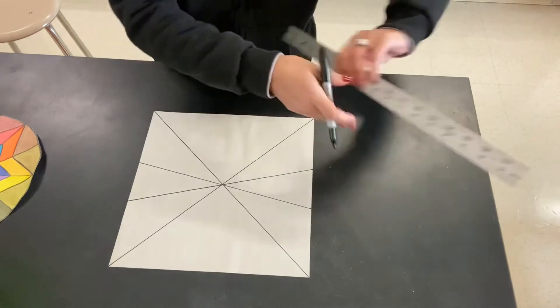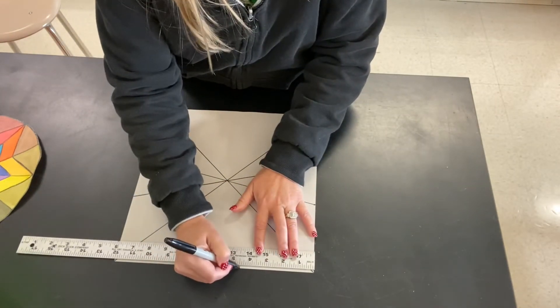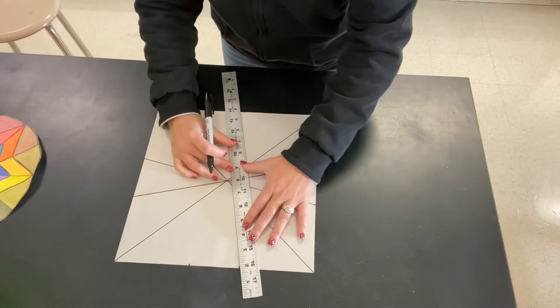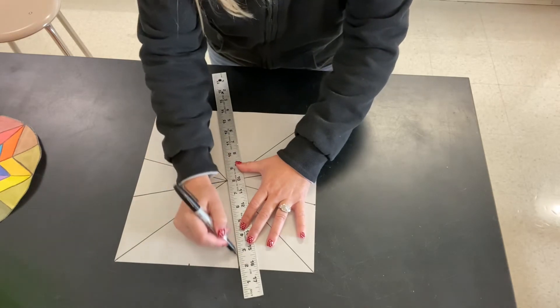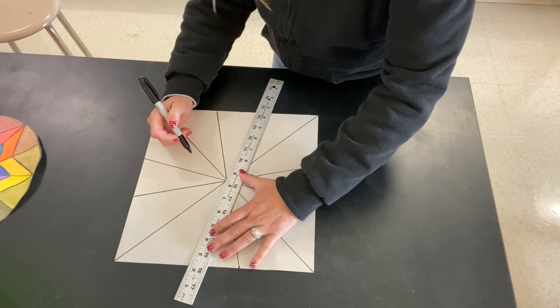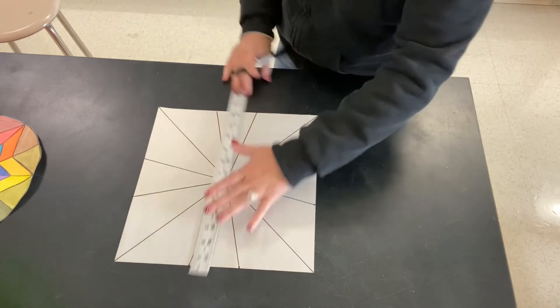And then we're going to do the same thing with the four and a half—make a mark, seven and a half, make a mark. And then we're going to line these up as well. This way you will have all equal pieces of pie. So now we've got all of them equal.